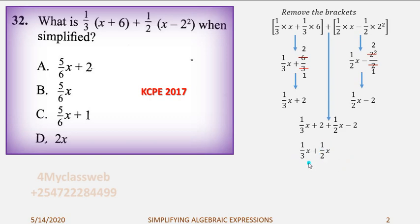This now, we can solve it by getting the LCM of 3 and 2, which is 6. Take 6, divide by 3, get 2, multiply by 1, or you multiply that one by 1, you get 2x. The same case, take 6, divide by 2, get 3, multiply by 1, get 3x. So, the numerator part, I have 2x plus 3x, which will now be 5x over 6. 5x over 6. And again, if you look at the answers that we are given, the choice is available there, that is B.